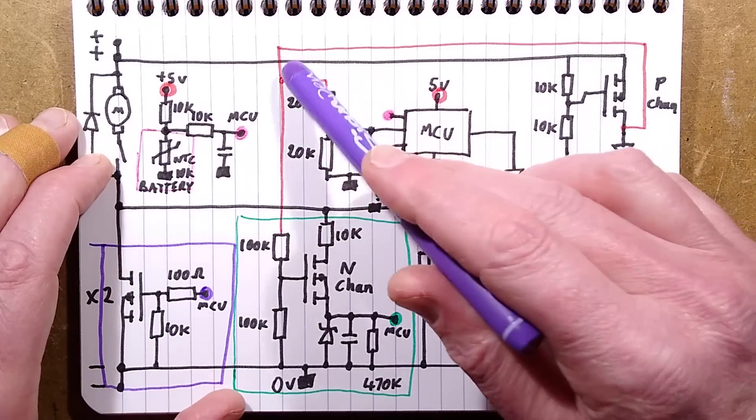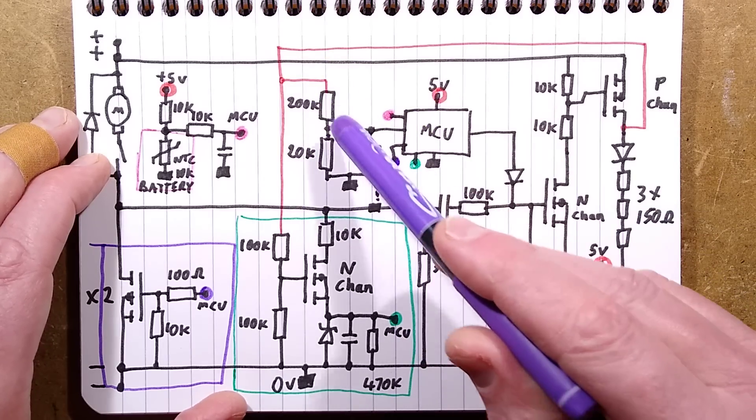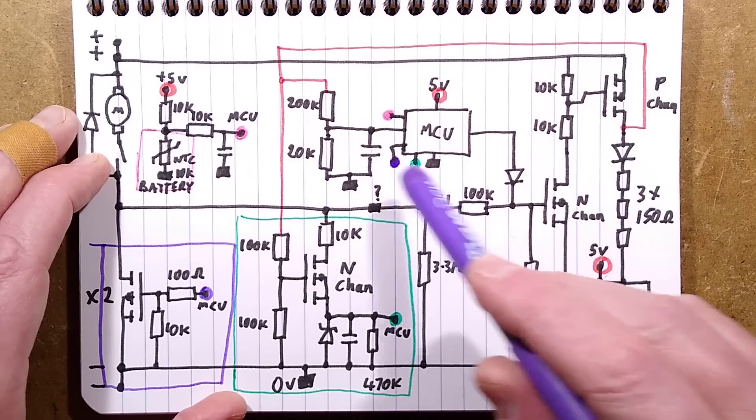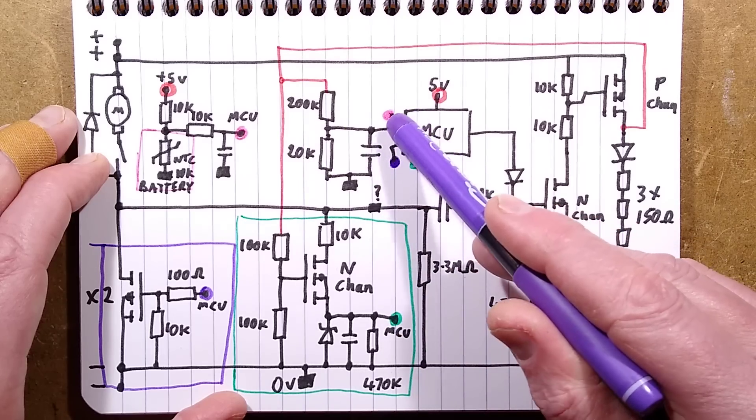It shuts everything down into a super low current quiescent state. When it's active though, this is presumably because it's a voltage divider, 200k and 20k, dividing it down to roughly about a tenth of the battery voltage. That is going to the processor. That might be for monitoring battery voltage.